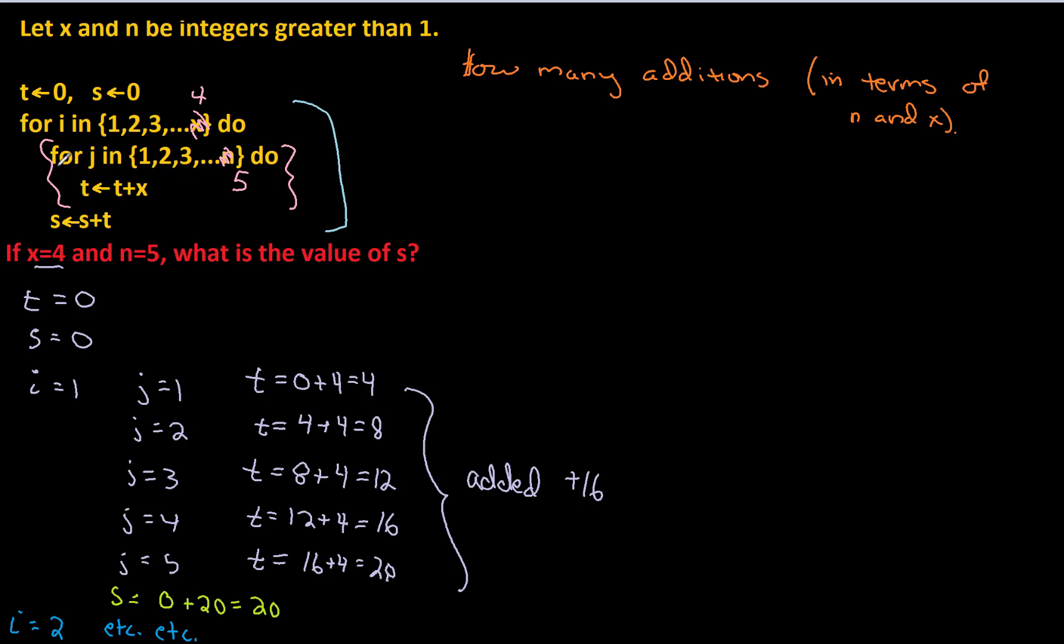Well, we can take a look here. In the j loop, we do n additions. Then we do one more addition with the s. So we get one more addition. So our total so far is n plus 1.